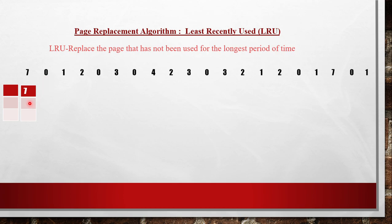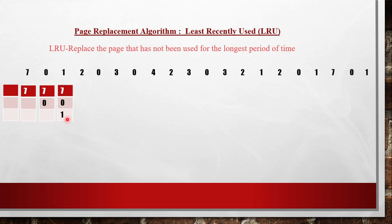Next page reference is 0. Is 0 present in frame 2 or frame 3? No, it is not present, so it should be brought. This is considered the second page fault — 0 is not present in main memory, so 0 should be brought from virtual memory to main memory. Then the third page fault occurs because 1 is also not present, so 1 has to be brought from virtual memory to main memory. So: 7 is in frame 1, 0 is in frame 2, and 1 occupies frame 3. Now all 3 frames are occupied.